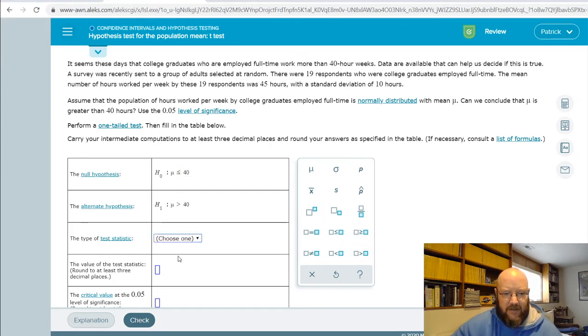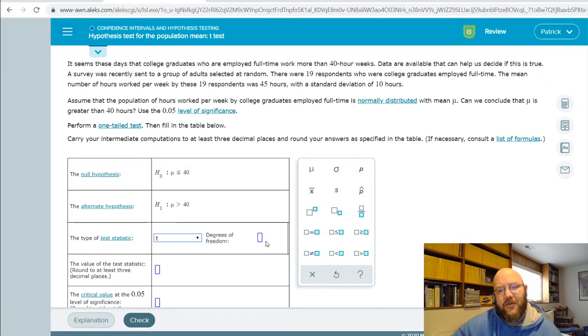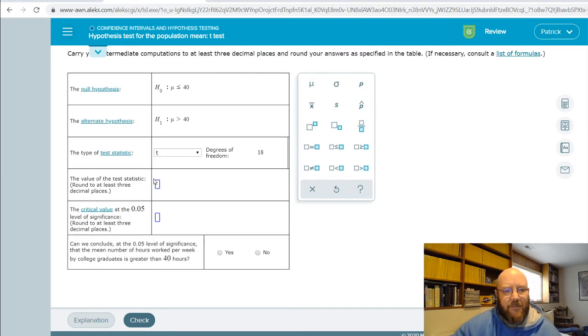So T stat on this one, first thing it's going to ask us for is degrees of freedom. And so degrees of freedom is always just the number of folks in your sample. So in this case 19 minus 1. And of course that's important for calculating other things, but you already knew that.